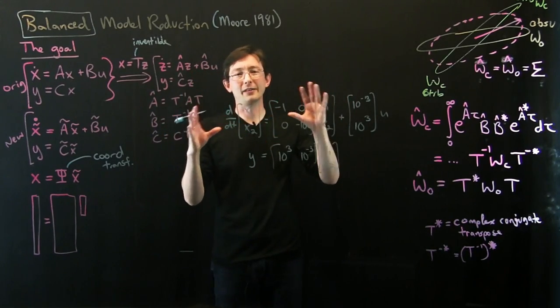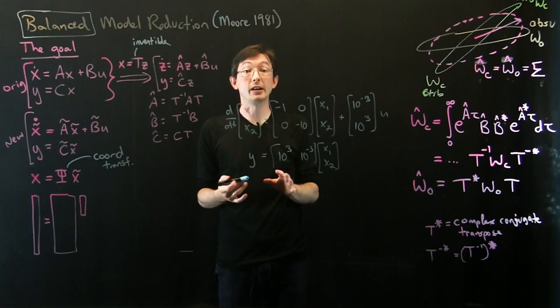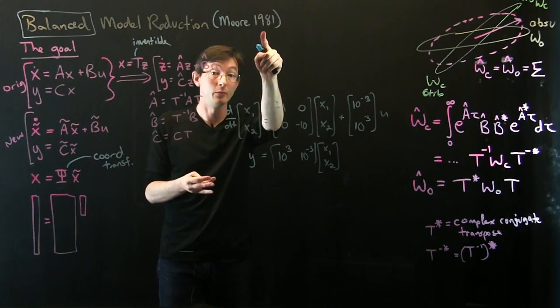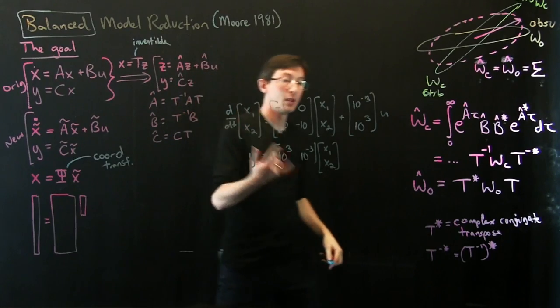Notice that my first state is way easier to measure than my second state. This is minus 3, this is plus 3. So this is just a really exaggerated toy system. In fact, this is basically modified from an example that Moore gave in his 1981 paper.